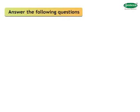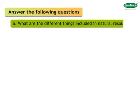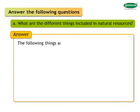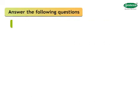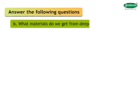Answer the following questions. A: What are the different things included in natural resources? Answer: The following things are included in natural resources — rocks, soil, air, minerals, plants, water, and animals.